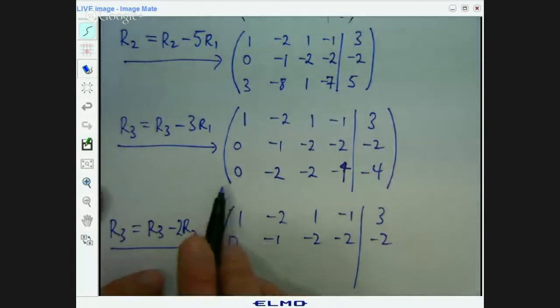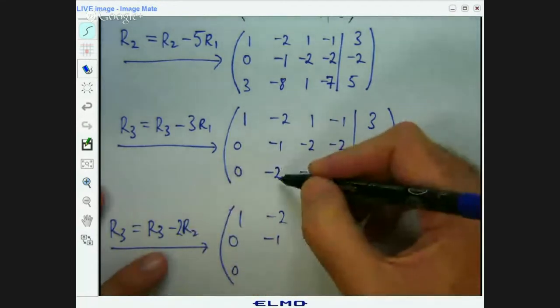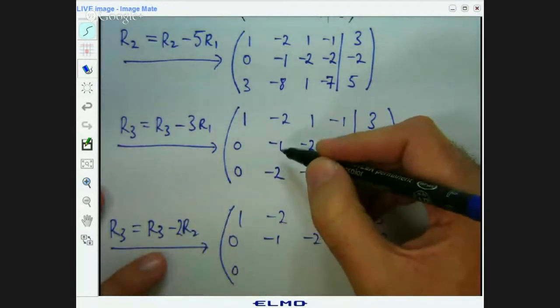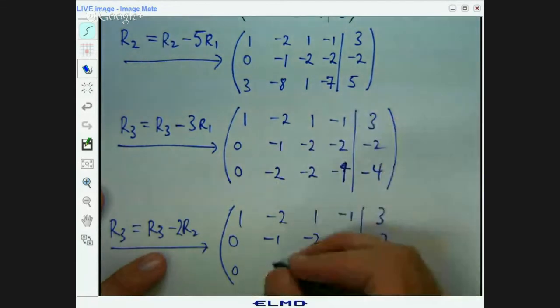Alright. So you've got 0 and 0 there, so that's not going to change. Negative 2 minus 2 times negative 1. So that's negative 2 plus 2, which is 0.